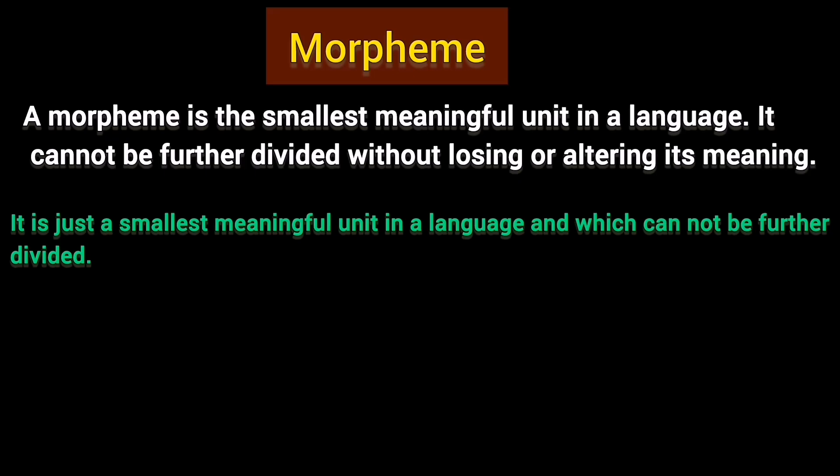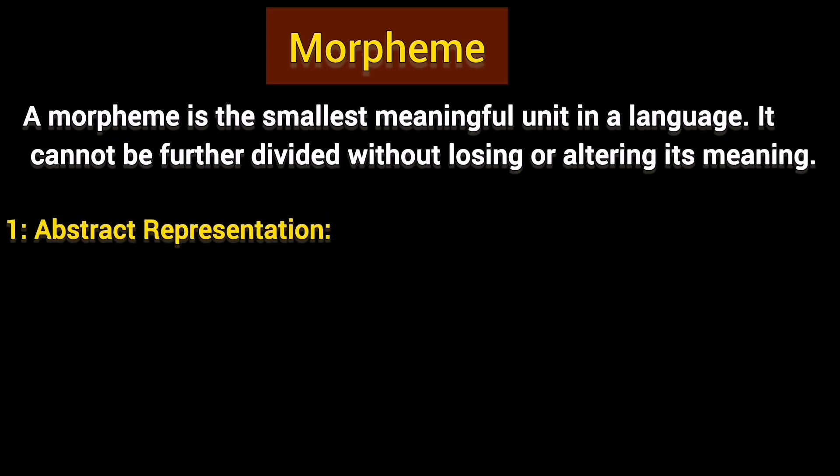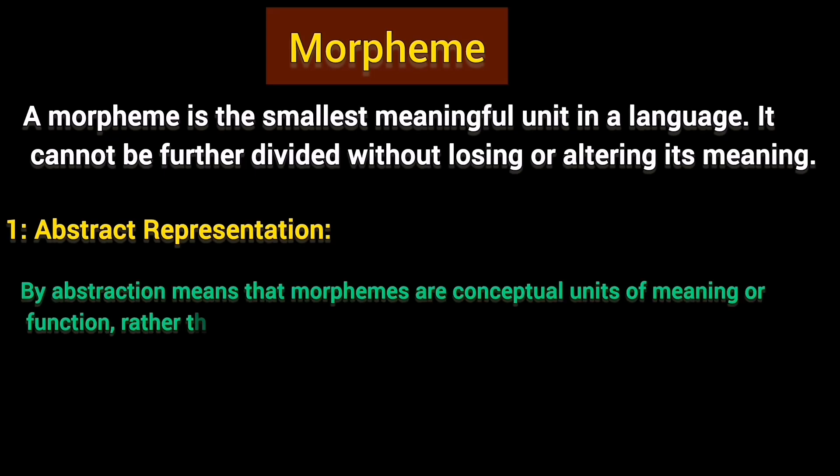The first main characteristic of a morpheme is abstract representation. Morphemes are abstract and represent meaning rather than physical form. By abstraction, morphemes are conceptual units of meaning or function rather than concrete forms. A single morpheme can have multiple physical forms depending on the linguistic context, but the underlying meaning or function remains constant. Keep in mind that a morpheme is an abstract concept represented through different forms.